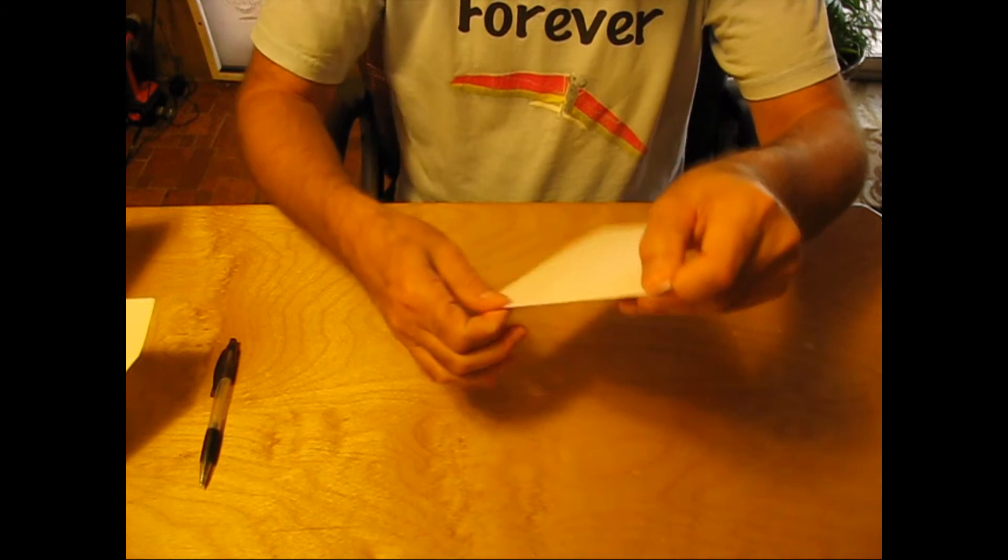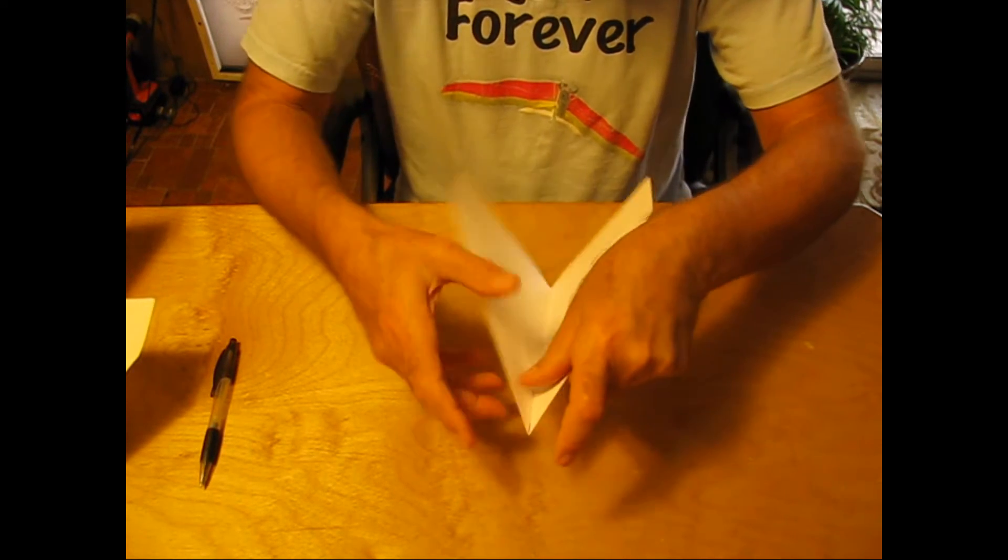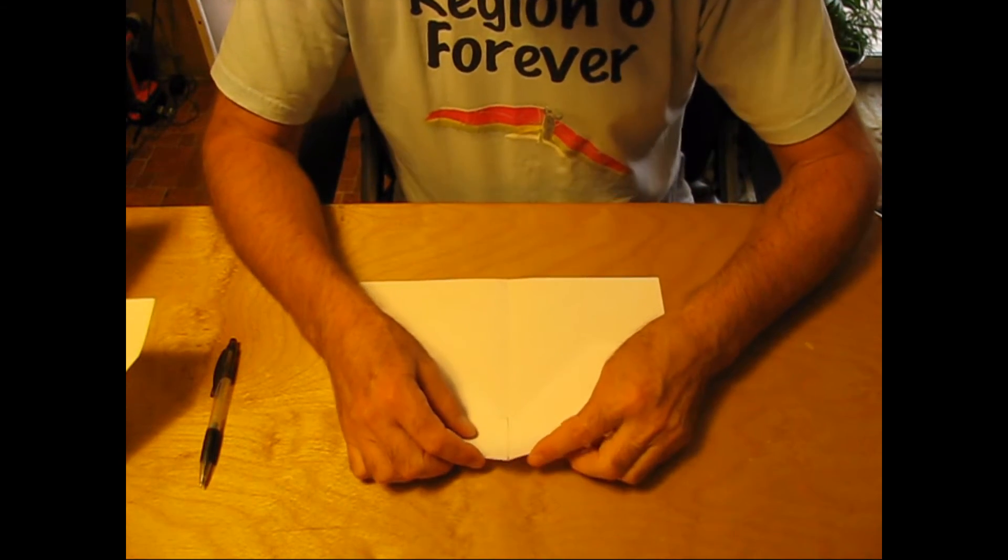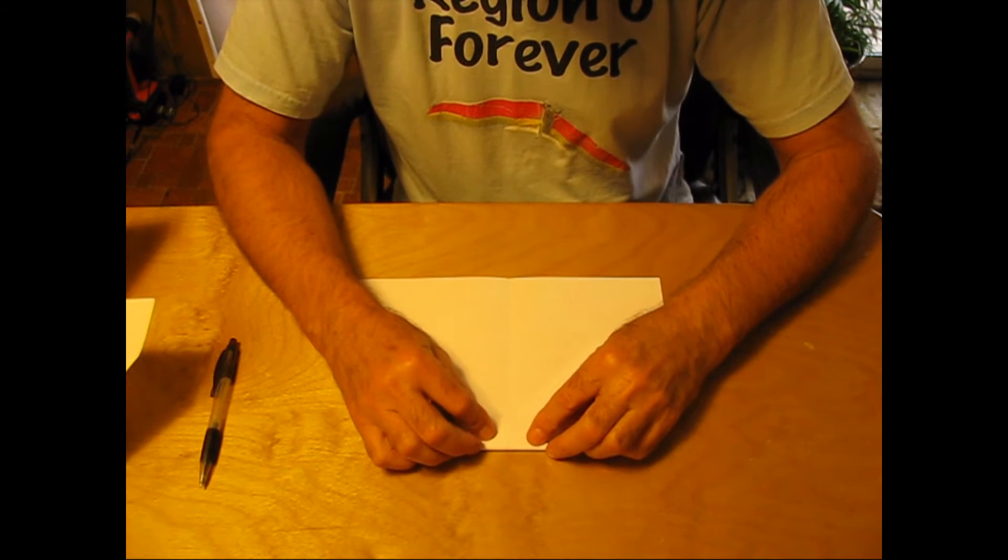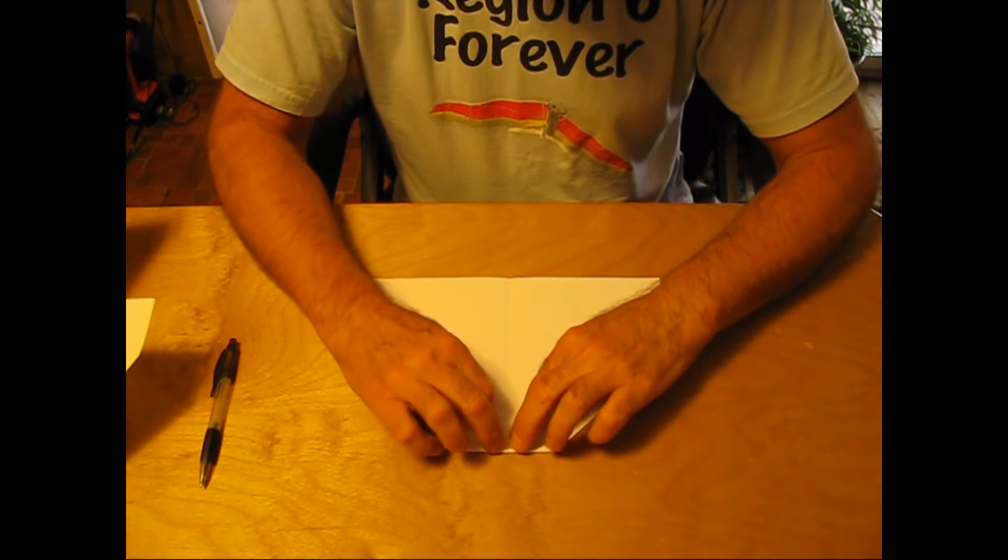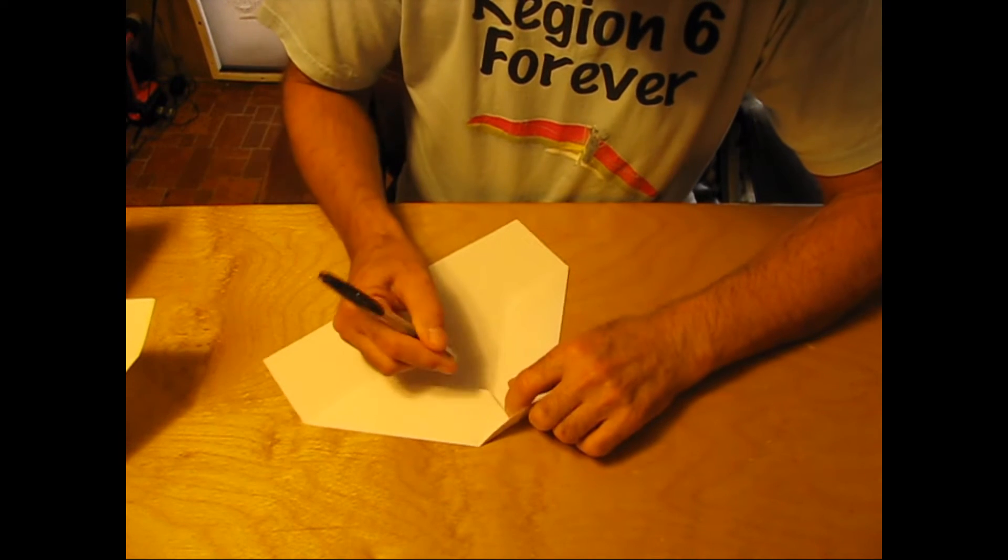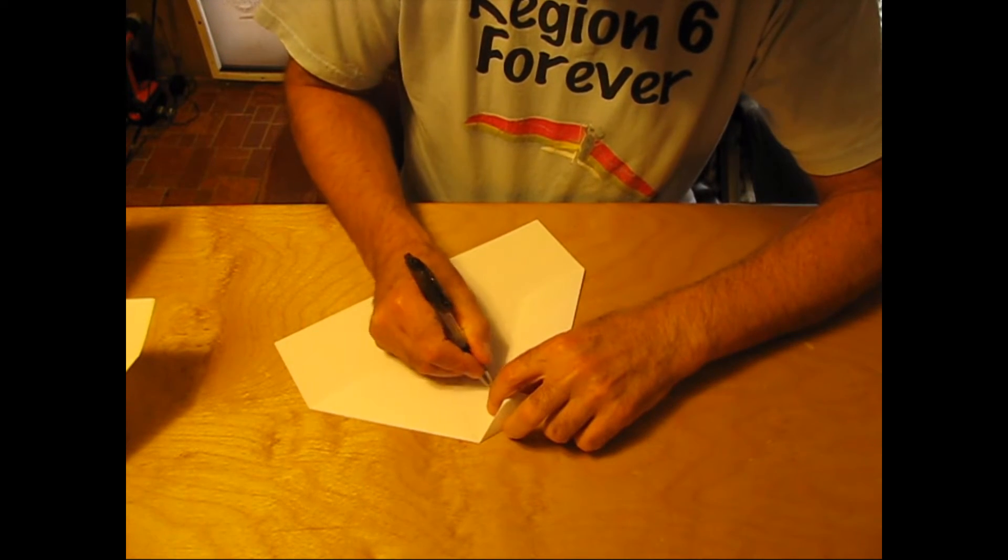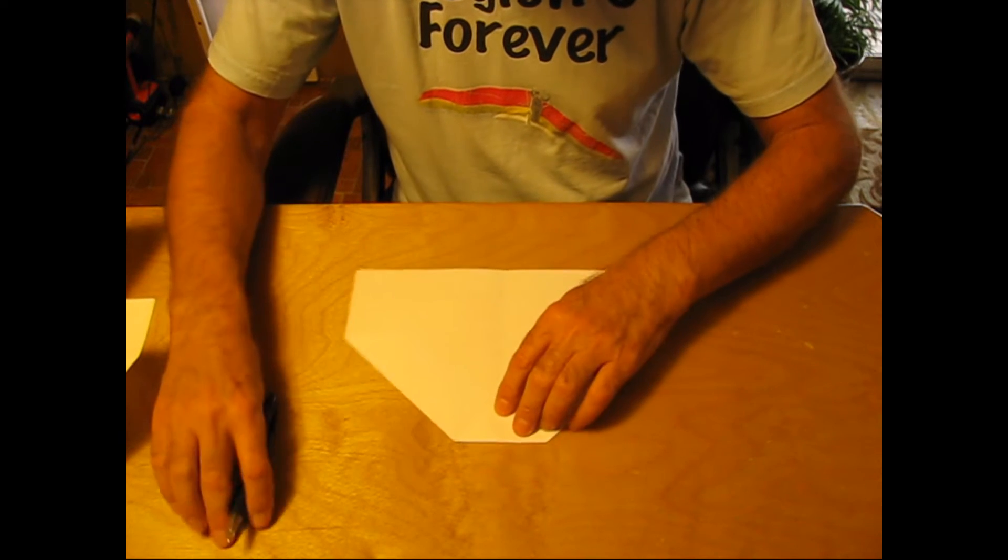Unfold, get that crease back in the other way, and now we're going to fold this tab down. You got this point here and that point there. We're just going to take it approximately right to there.